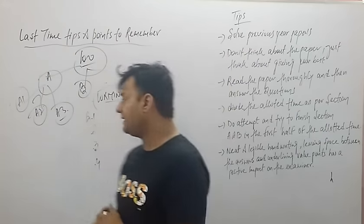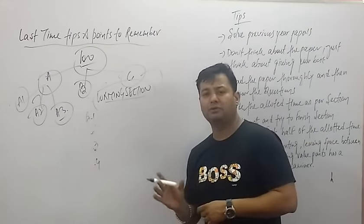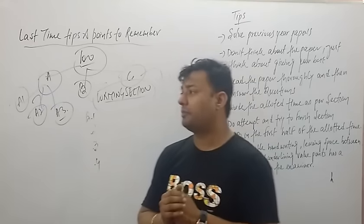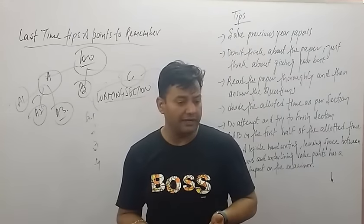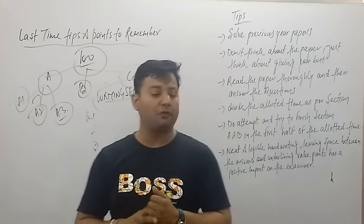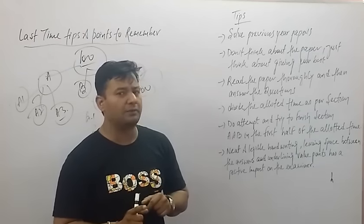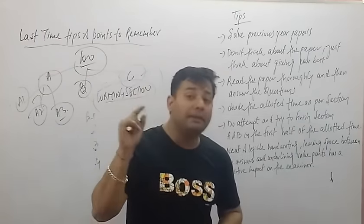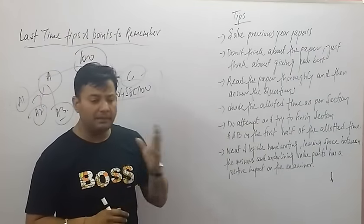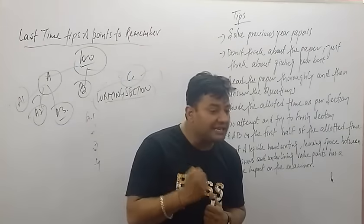Then we move to the third section, which is Section C — known as the books section. Generally you worked on the books the whole year, but sorry to say, many students are still not familiar with each and every chapter. You need to work on four parts: Flamingo chapters, Flamingo poetry, and the supplementary reader. The basic strategy is: read, read, read, and read so that you can clear each and everything.